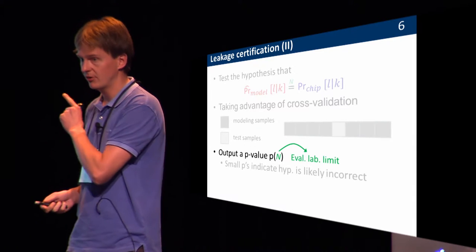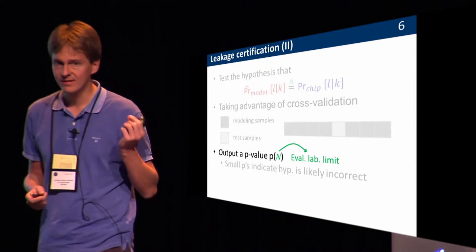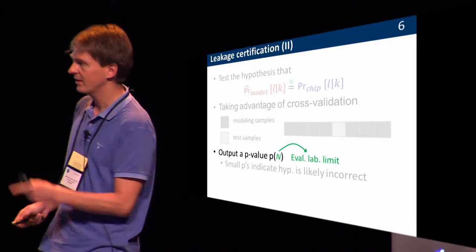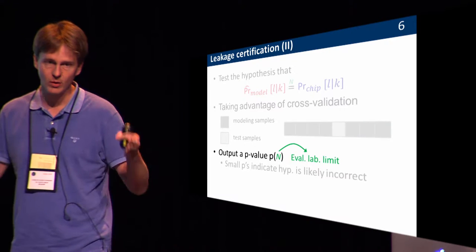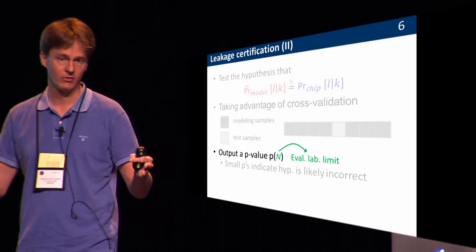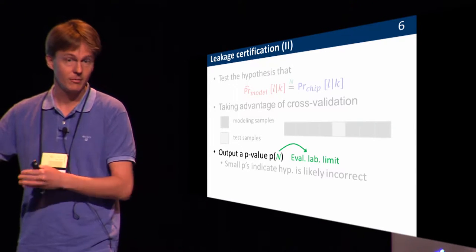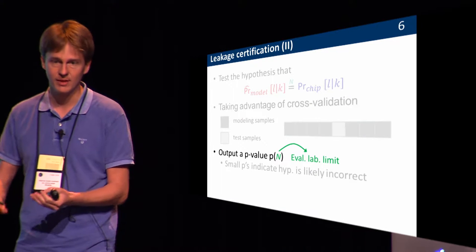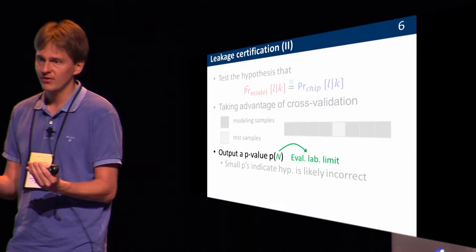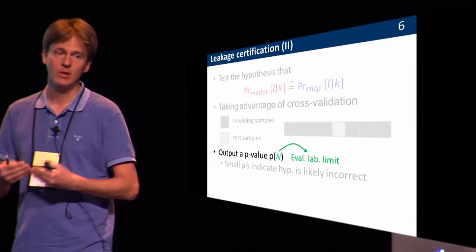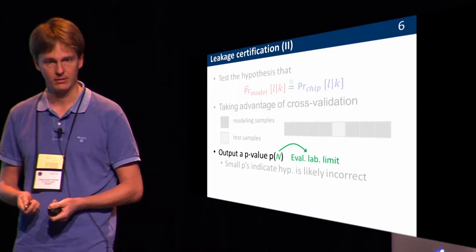This approach will never tell you the model is perfect — most likely the model is still incorrect. What it tells you is that given only one week of measurement, you can try to improve the model, but it's useless, because all the improvements you can make will be hidden by estimation errors anyway.